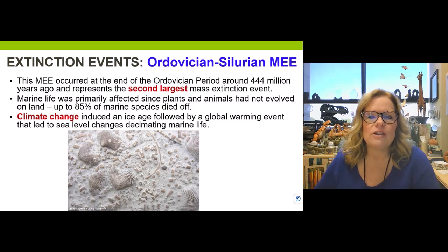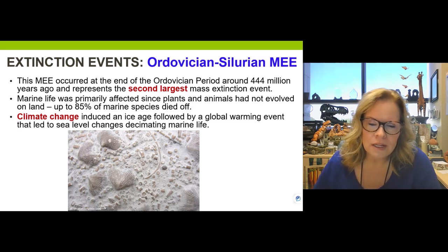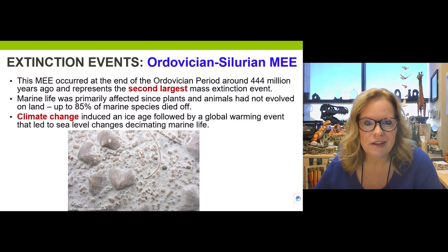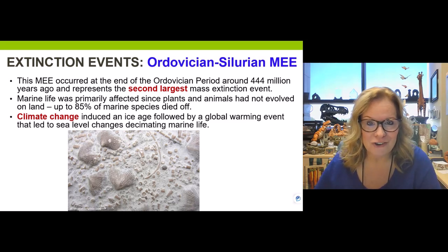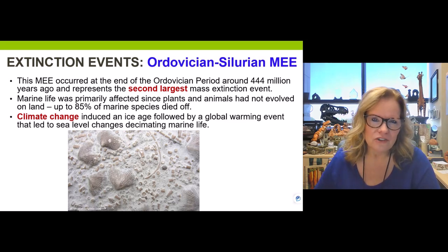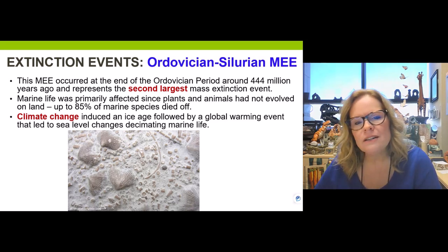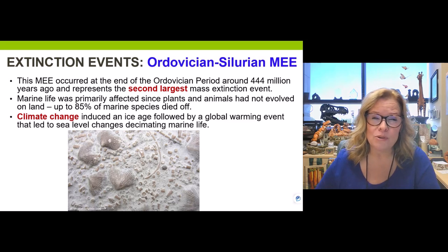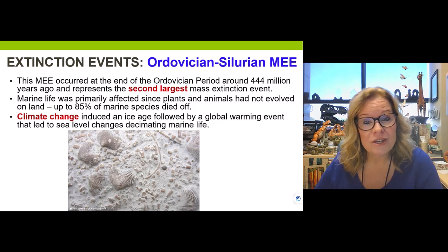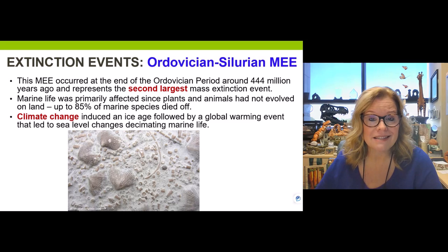As we go through these events, note whether one ranks in the top three mass extinction events and which place it holds — first, second, or third. Pay attention to the percentage of organisms that went extinct. Was it predominantly marine life, terrestrial life, both, or plant life? And was there a known reason scientists can attribute the mass extinction to?